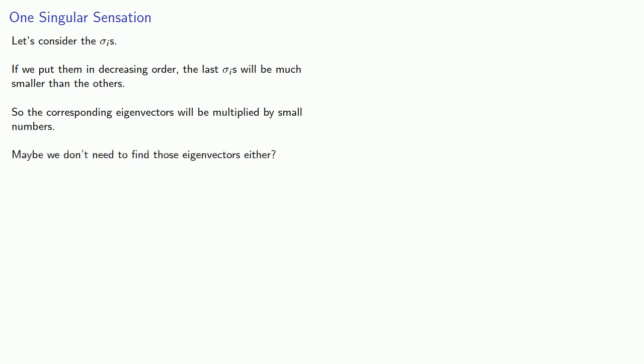Let's think about this some more. Let's consider those σ_i's. If we put them in decreasing order, the last σ_i's will be much smaller than the others, and so the corresponding eigenvectors will be multiplied by small numbers. And so maybe we don't need to find those eigenvectors either.